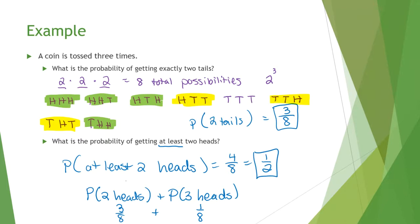It's a little harder to do this when you have more possibilities. Eight possibilities is easy to write down, but if you have 100, you don't want to write all those down. That's where we start using things like permutations and combinations from section 9.6.